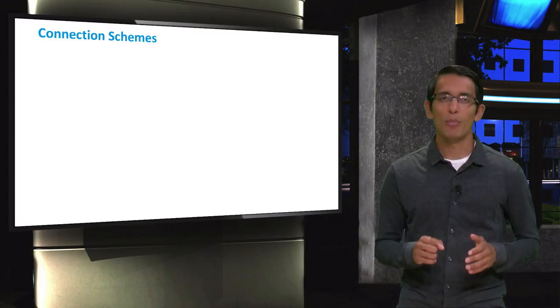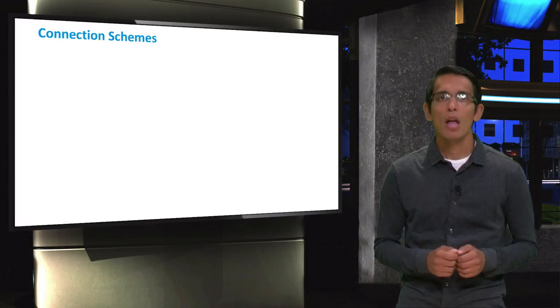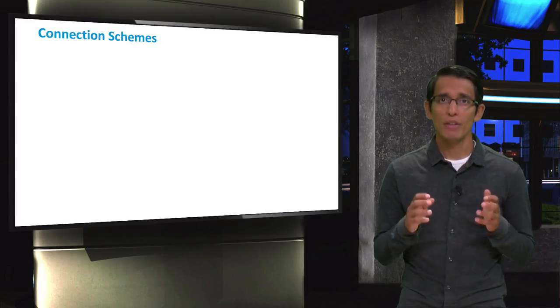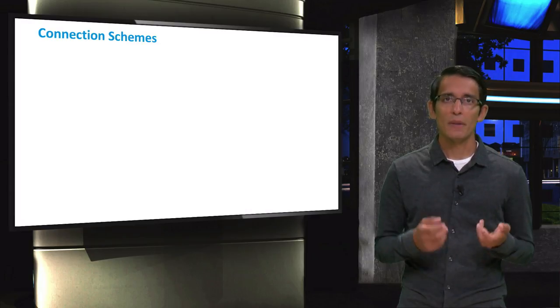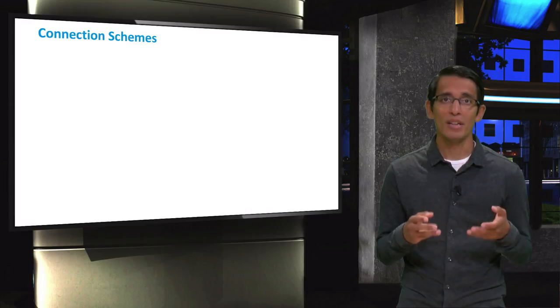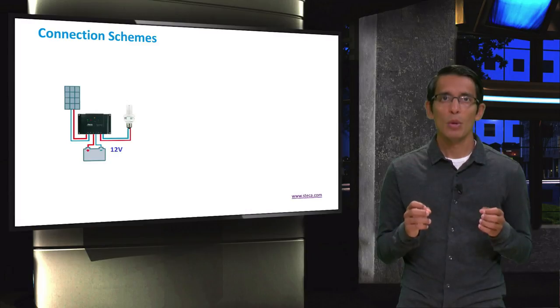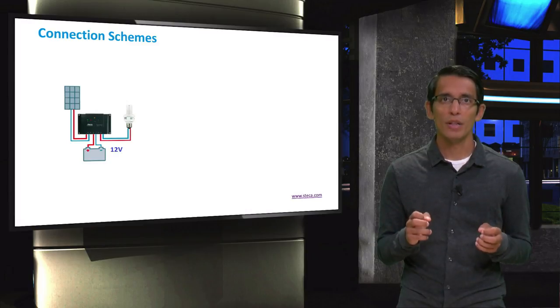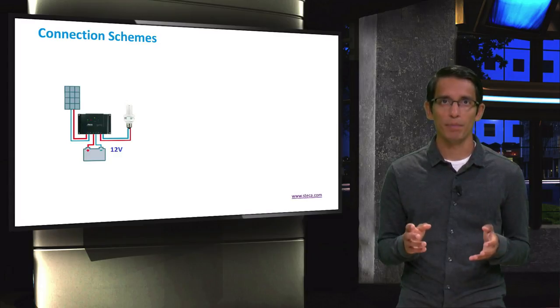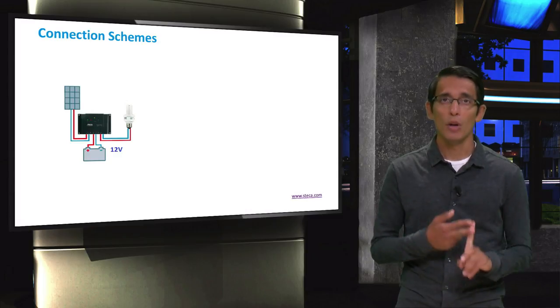Finally, I will talk briefly about a couple of PV system topologies where a charge controller is used. As we know already, the charge controller is an important component of an off-grid PV system. So when deciding on the type of charge controller to be used, a proper decision has to be made for the right type of PV system. For example, when a PV system with only small DC loads are involved, the charge controller can be the component that brings all the other system components together. They are the PV modules, the batteries, and the loads.